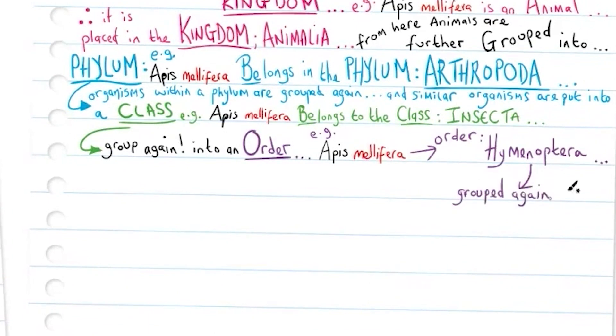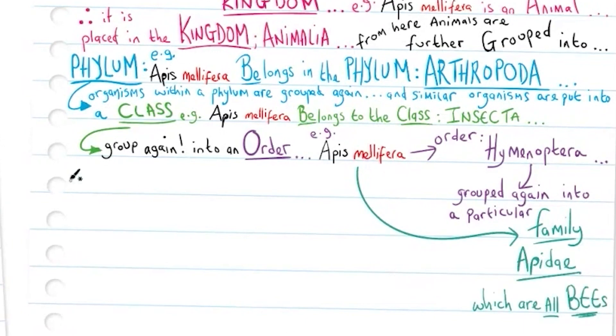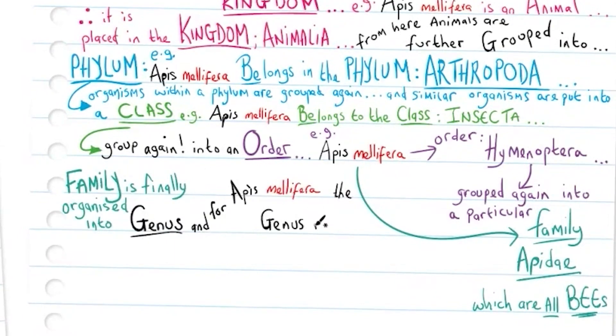Orders will be grouped again into a particular family, and Apis mellifera belongs to the family Apidae, which are all bees. Family is finally organized into genus, and for Apis mellifera the genus is Apis.